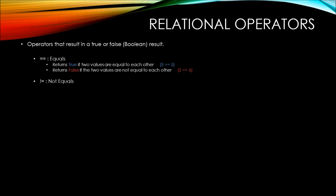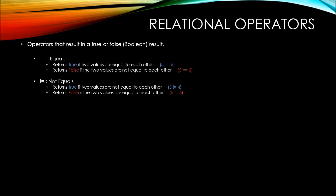Alternatively to the equals operator, there is the not equals relational operator. The not equals relational operator returns true if the two values are not equal to each other — so 5 does not equal 4 would return true. The not equals relational operator returns false if the two values are in fact equal to each other, so 5 not equals 5 is in fact false.